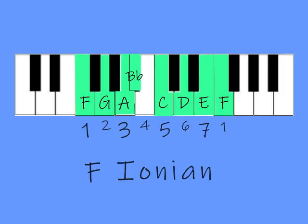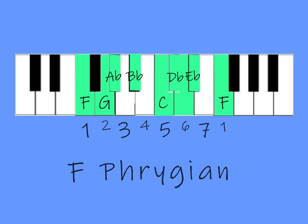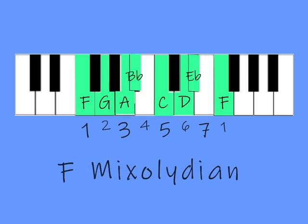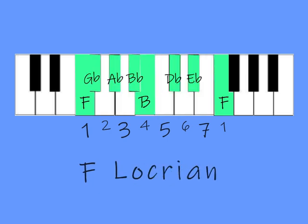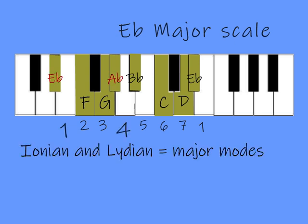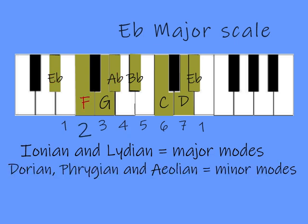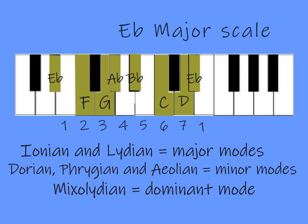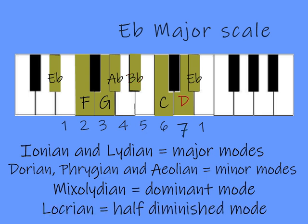So there you have it. Ionian, Dorian, Phrygian, Lydian, Mixolydian, Aeolian, and Locrian. No matter what key you're in, no matter what scale of notes you're using, the Ionian and Lydian modes are major modes. The Dorian, Phrygian, and Aeolian modes are minor modes. The Mixolydian is a dominant 7 mode, and the Locrian is a half-diminished mode.